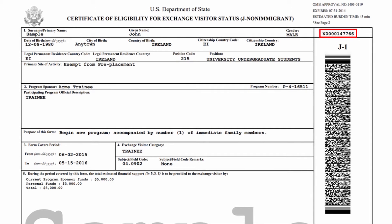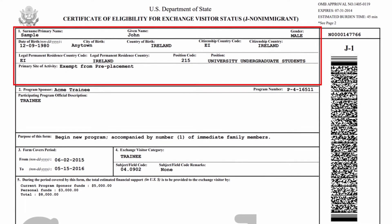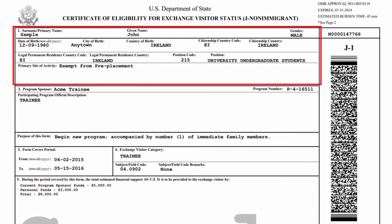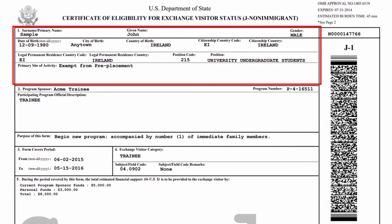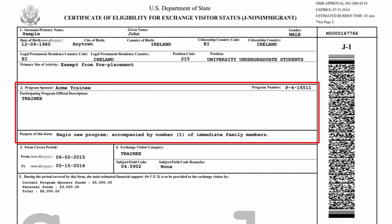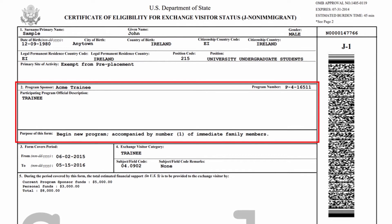Starting with page 1, at the top right corner is the service ID number. This number always starts with the letter N. Block 1 of the document identifies you as the participant in the J-1 program. Block 2 includes the name of your program sponsor and describes the nature of your J-1 program to be completed.